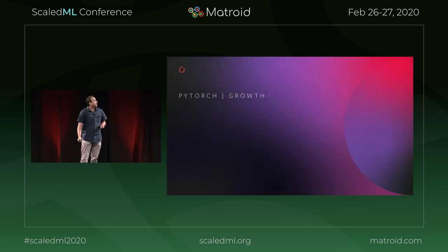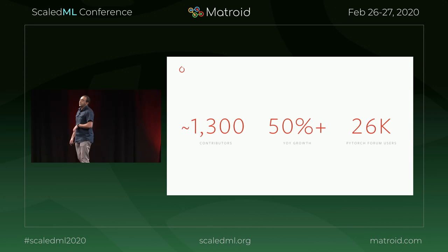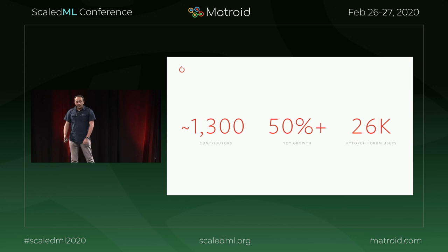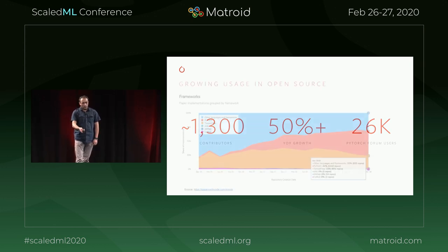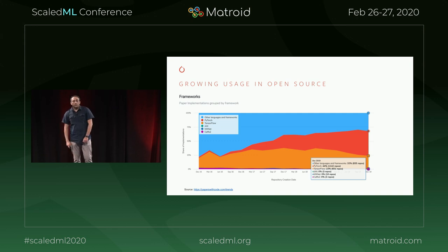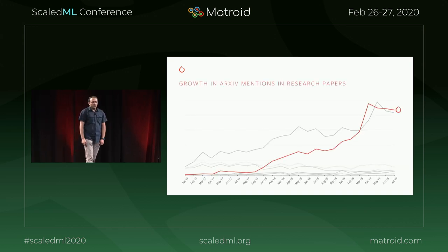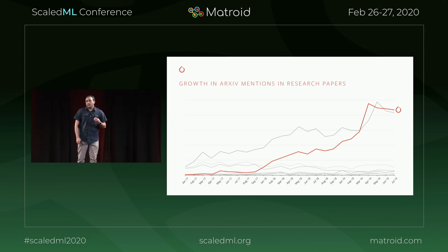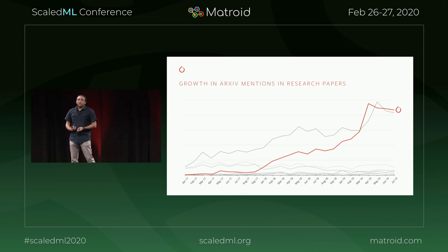PyTorch has been growing a lot over the past two and a half years. We're nearing 1,300 contributors across many companies. It's getting a lot of popularity in paper archives and in the open source world. We've seen significant growth in the number of papers published using PyTorch. I think the most important thing here is why is this growth? Personally, I think it's attributed to the simplicity of the API and how easy it is to use.